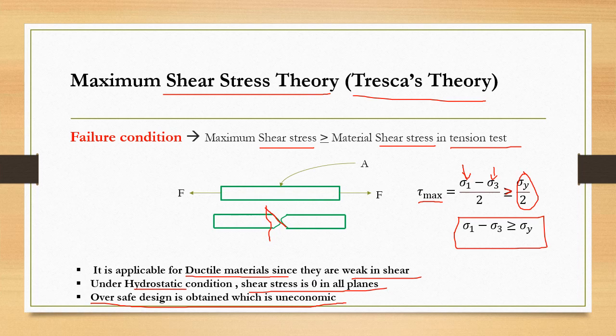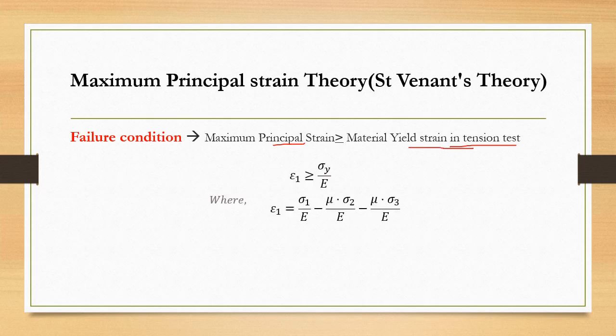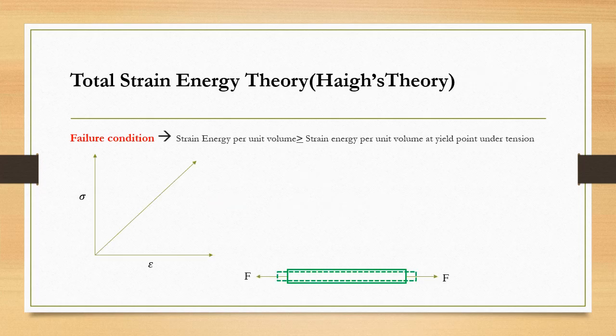The third is the maximum principal strain theory. This theory considers principal strain rather than principal stress or shear stress. Everything else remains the same — when the principal strain from the three-dimensional loading state becomes greater than or equal to the strain from the simple tension test, the material will fail. The only difference compared to the previous two theories is that strain is used instead of stress.